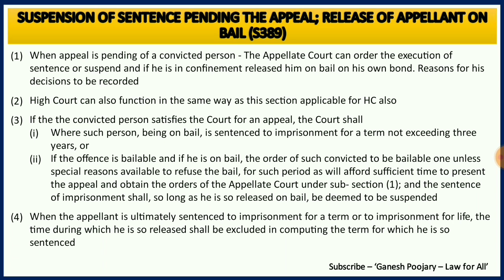What happens when the convicted person gets the punishment even after the appeal? That is discussed under subsection 4. For example, imagine he has got a sentence of three years imprisonment and he was outside on bail for six months because of the appeal. In that case, whatever period he was outside will not be counted as part of his sentence — he has to serve that period as an additional period so that his imprisonment for three years is completed. That is another aspect discussed under subsection 4.